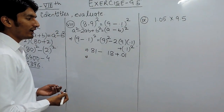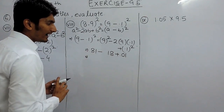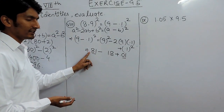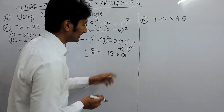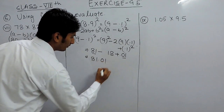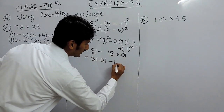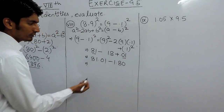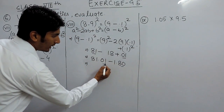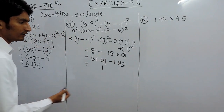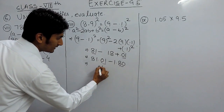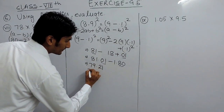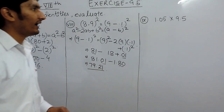According to BODMAS, we first add the positive terms: 81 plus 0.01 gives 81.01. Now we subtract 1.8. After the decimal there are 2 digits, so I convert 1.8 to 1.80. Subtracting: 1 minus 0 is 1, 10 minus 8 is 2, then 80 minus 1 is 79. So the answer is 79.21.